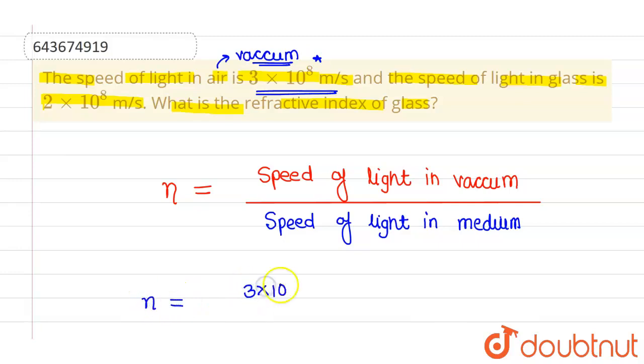3 × 10⁸ divided by the speed of light in the medium, which is 2 × 10⁸ m/s. So this will be 3/2, which comes out to be 1.5. So